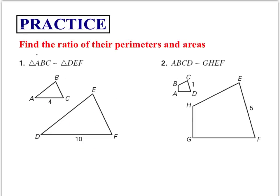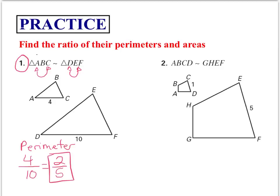Let's do a few more practice problems finding the ratio of perimeters and areas. For number 1, AC corresponds to DF. It's good to go by the similarity statements because they already have it organized. AC is 4, DF is 10. We always have to simplify, so we divide both by 2, giving us a ratio of perimeters of 2 over 5. Since it's already simplified, we square the top and bottom to get the ratio of areas: 4 over 25.